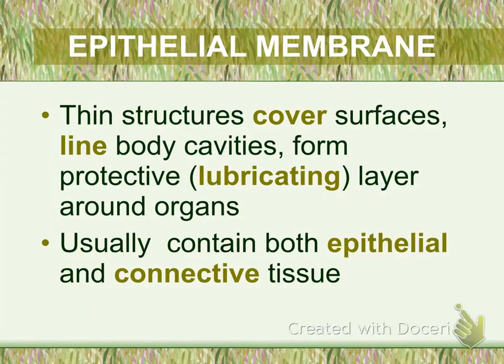Talking about a membrane — if you recall back in biology, the cell membrane — a membrane is a thin covering or a lining. There are two major types of membrane. The first is called the epithelial membrane. The locations of epithelial membrane are similar to epithelial tissue: it covers body surfaces or lines cavities or organs. The major functions are lubrication and keeping organs or body structures moist, and it is made up of both epithelial and connective tissue.